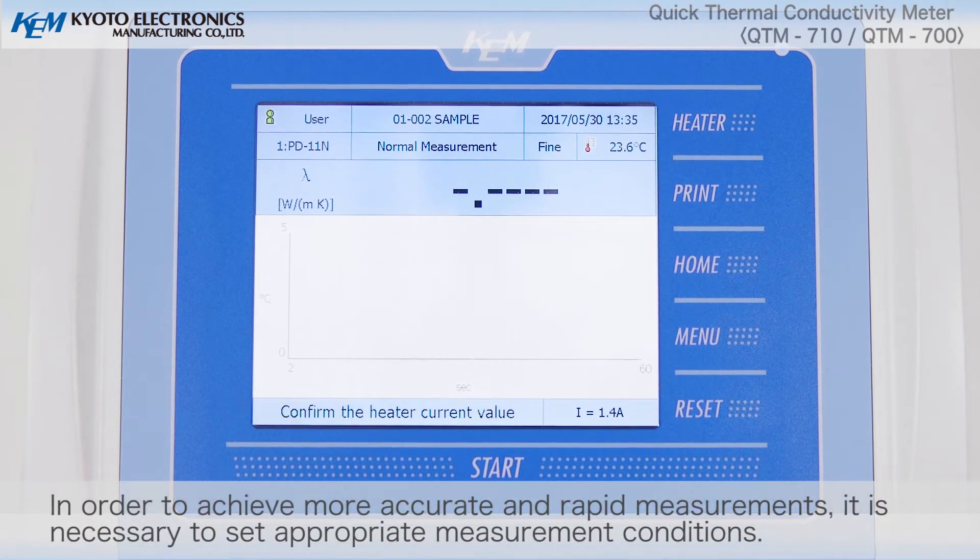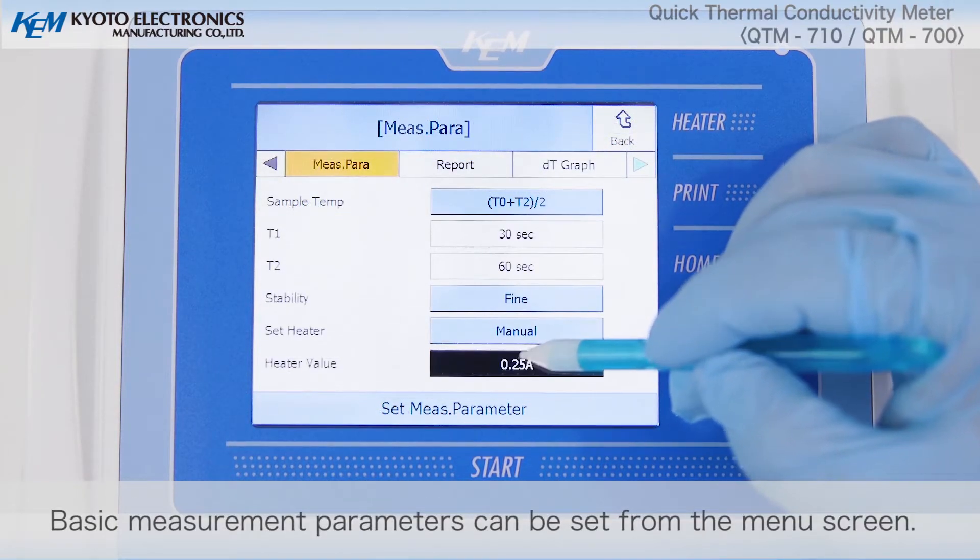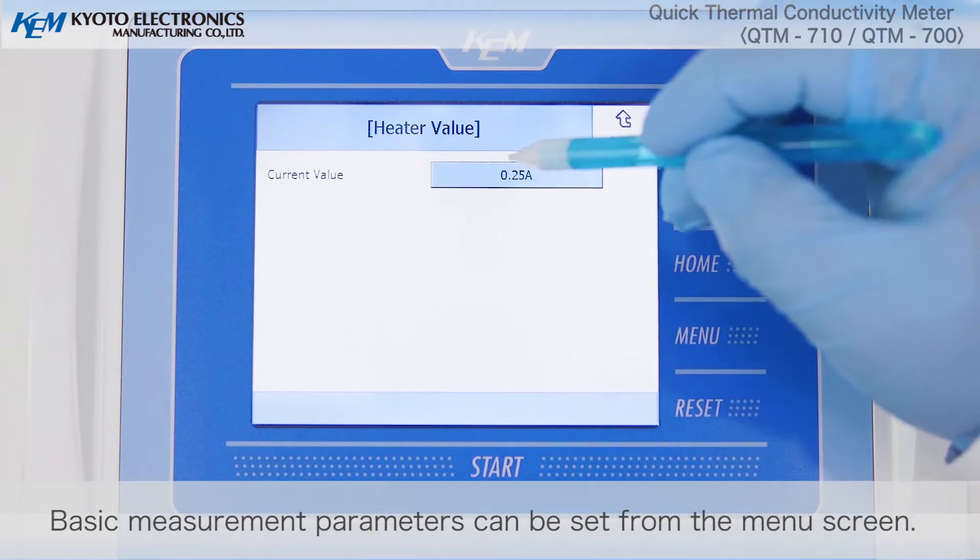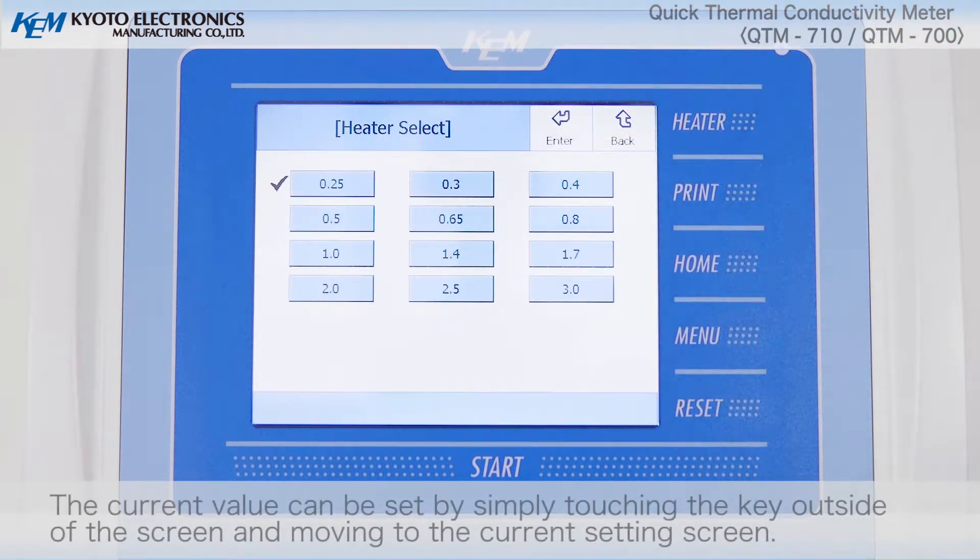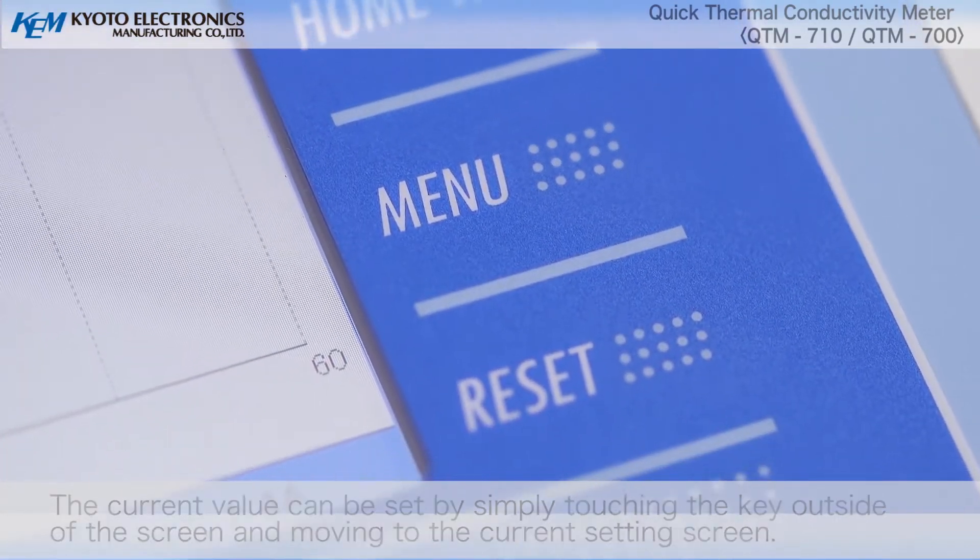In order to achieve more accurate and rapid measurements, it is necessary to set appropriate measurement conditions. Basic measurement parameters can be set from the menu screen. The current value can be set by simply touching the key outside of the screen and moving to the current setting screen.